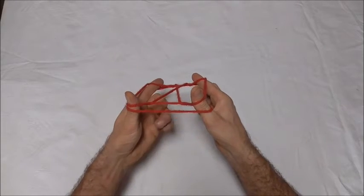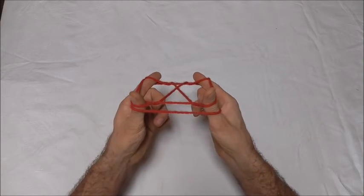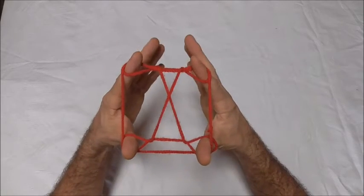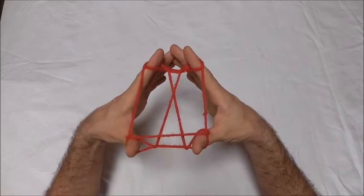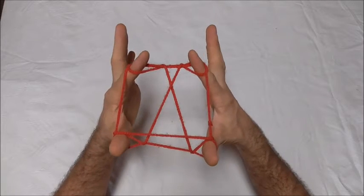Then you should notice there's a straight string here down the bottom of the thumbs. We want to put that to the palm side by rotating the thumbs inward and letting it drop to the other side of our hands.